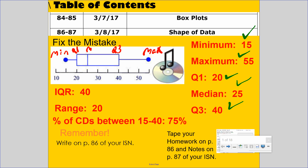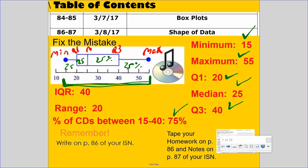In a box plot, each quartile is worth 25 percent — think about the word 'quartile,' it has 'quarter,' which is 25. The percentage of data between 15 and 40 covers three quartiles, so that's 75 percent — check. Now let's look at the range: it goes from 15 to 55, but they said it's 20. That's wrong.